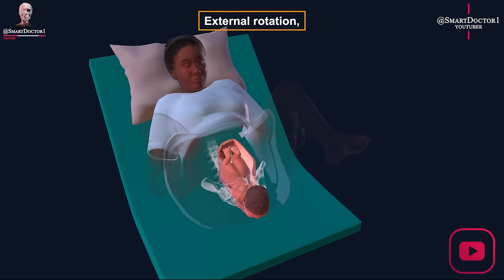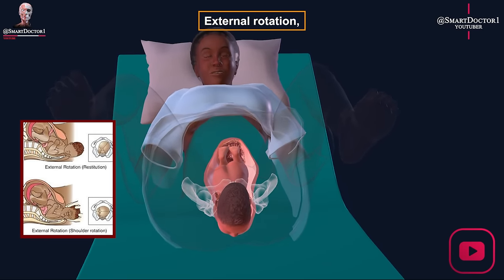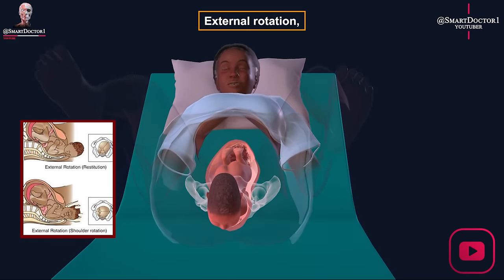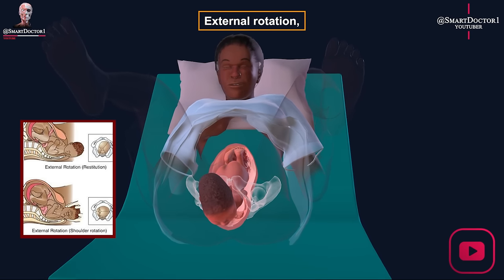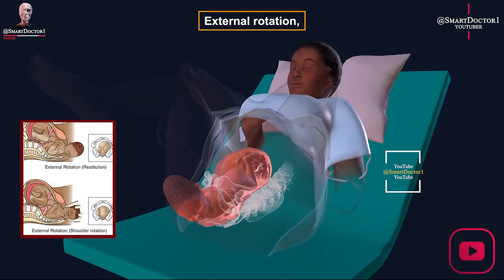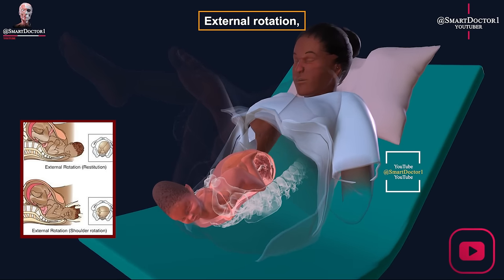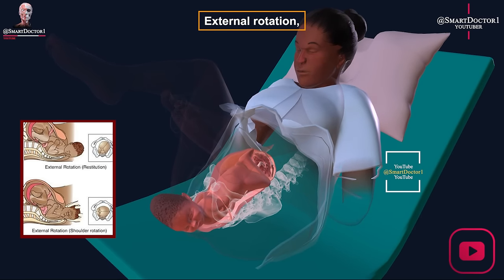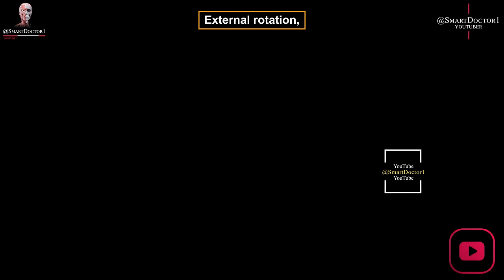External rotation is the sixth stage of the cardinal movements of labor, during which the fetus rotates back to its previous position after the fetal head is out. This rotation is necessary to align the fetal shoulders with the pelvic outlet, which facilitates the delivery of the rest of the fetus.